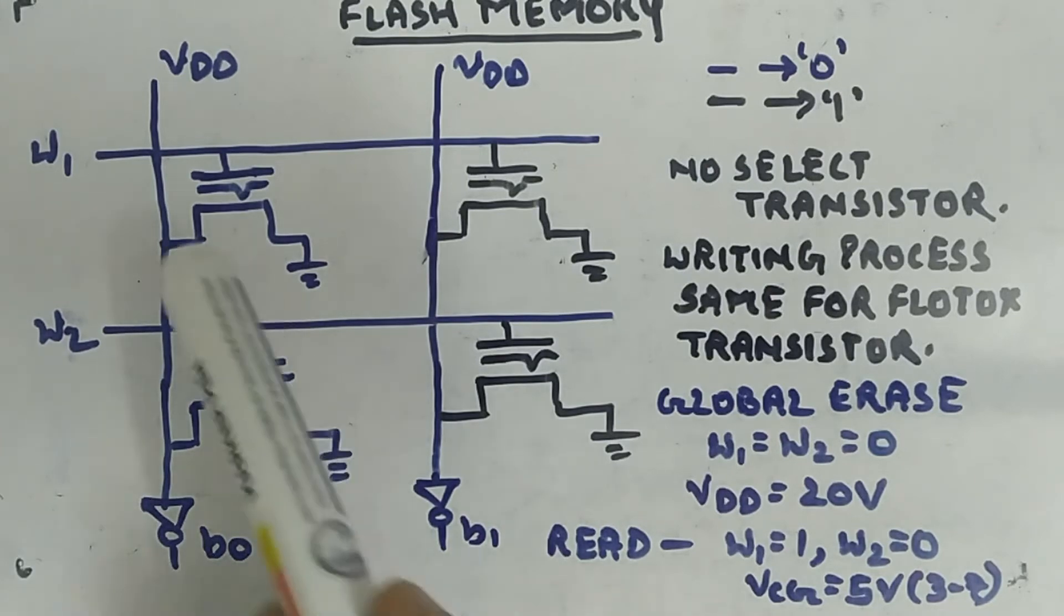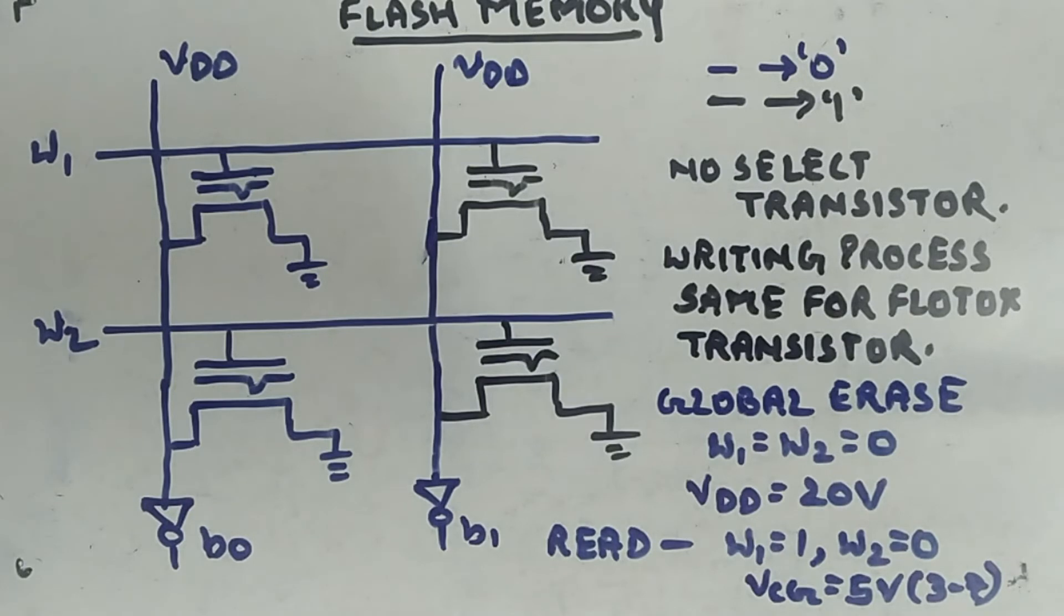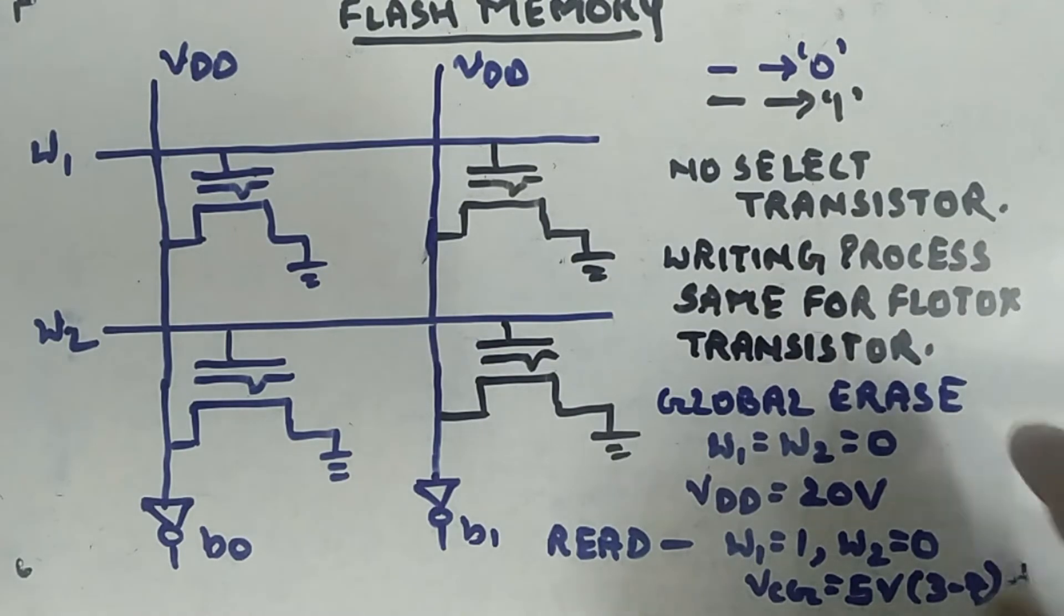Zero one, which is what you stored, right? So you're getting zero one. That's how you do the reading. Reading and writing are similar; only the erase part is new here.